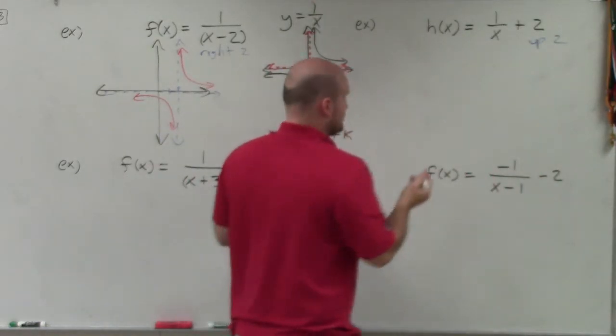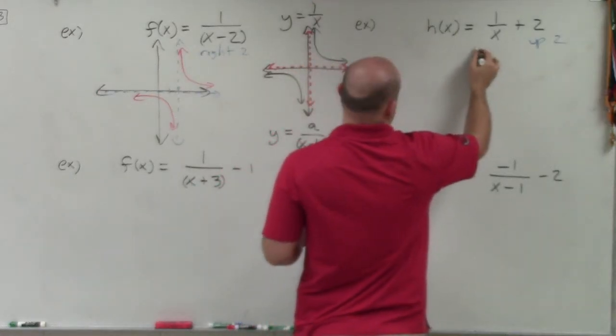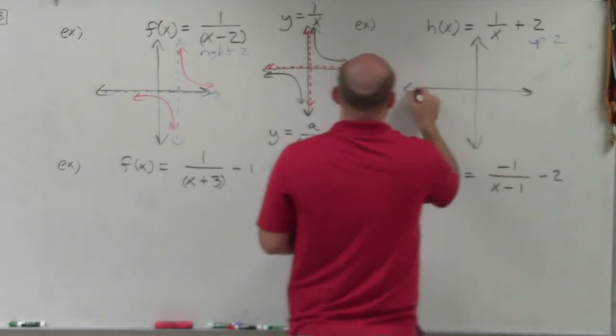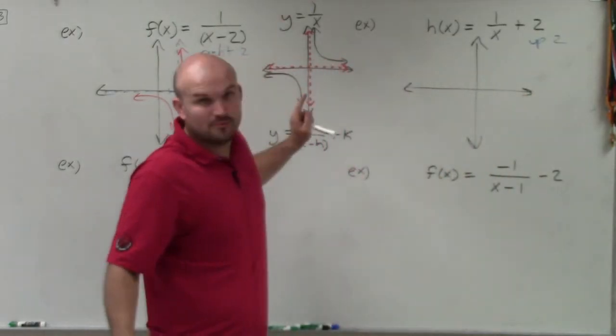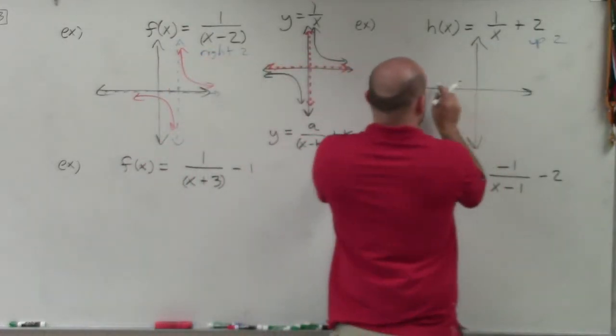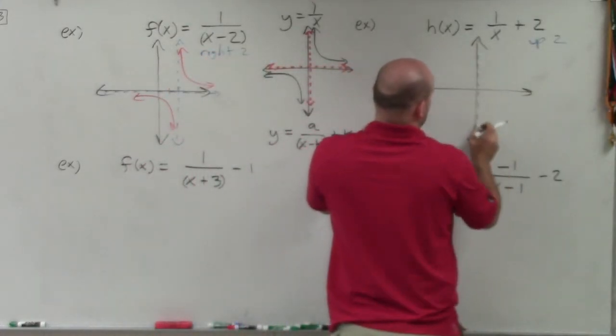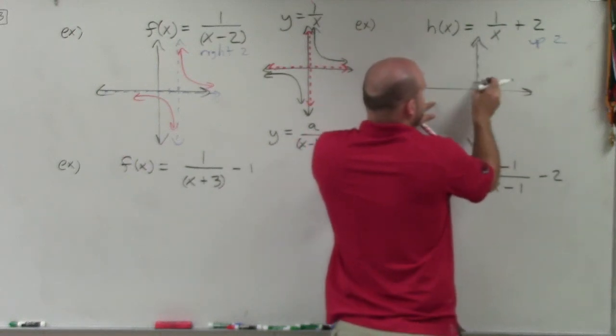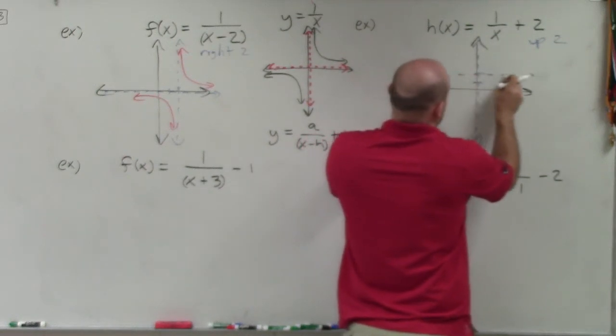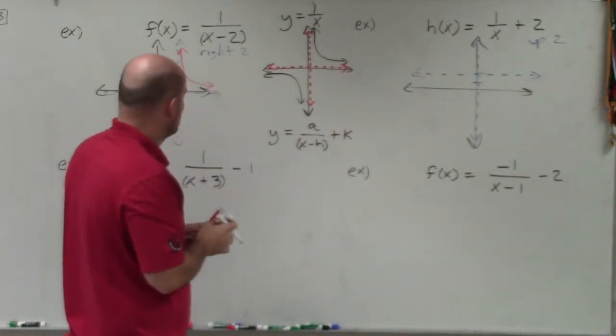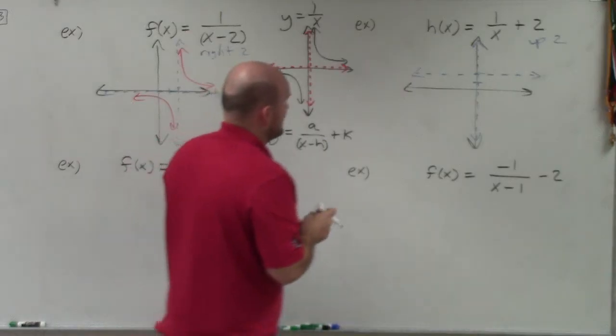So again, I'm going to draw my x and y-axis here. Well now, the vertical asymptote, when you shift the graph up 2, the vertical asymptote is already vertical. So that's not going to move. But now my horizontal asymptote, and it being at 0, if I shift it up 2, is now going to be up 2. And then, now I've created both my asymptotes. Now I can just go ahead and sketch my graph.